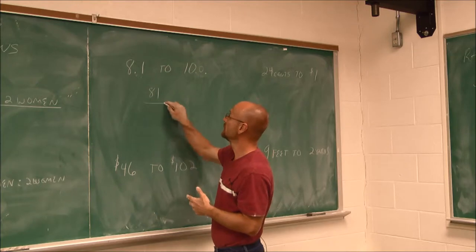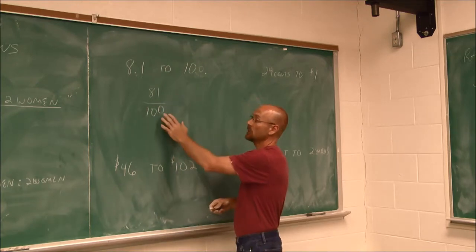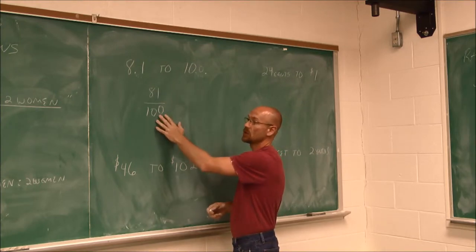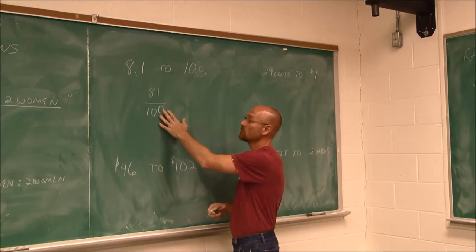So it would be 81 to 100, or 81/100. So then maybe we would reduce this. This is why we might write a ratio in terms of a fraction, so that we can go ahead and reduce it.